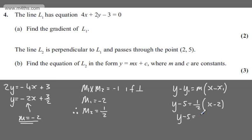y - 5 = (1/2)x - 1, and adding 5 to both sides, y = (1/2)x + 4. The final answer in the form y = mx + c is y = (1/2)x + 4.